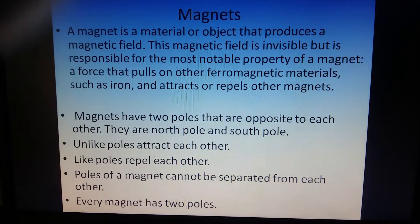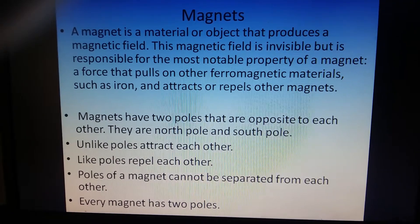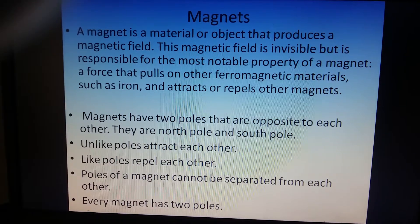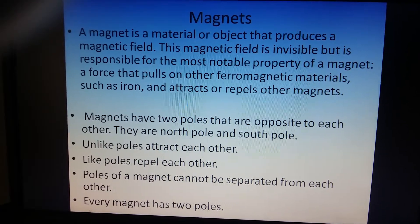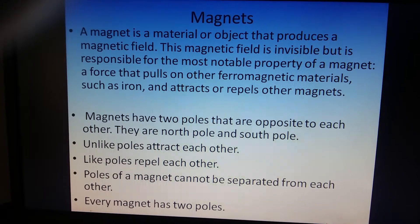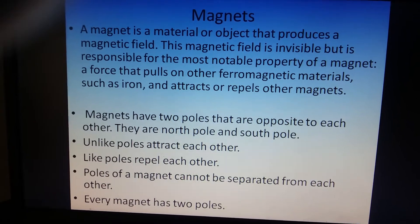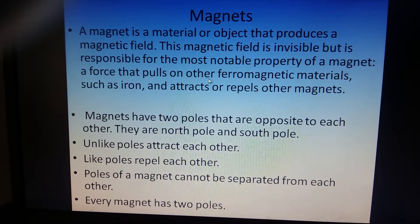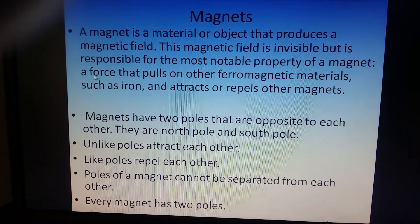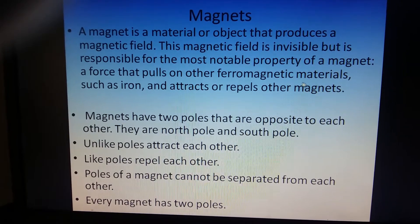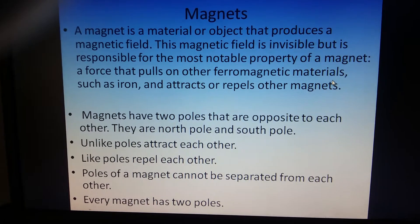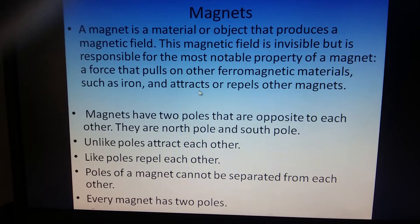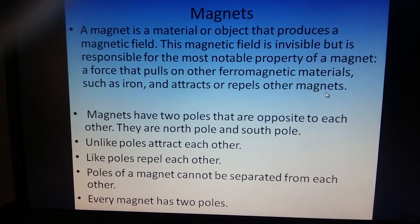After simple machines we studied magnets. What are magnets? A magnet is a material which produces a magnetic field. The magnetic field is invisible but it gives the magnet a force that pulls on other ferromagnetic materials such as iron, and it also attracts or repels other magnets.